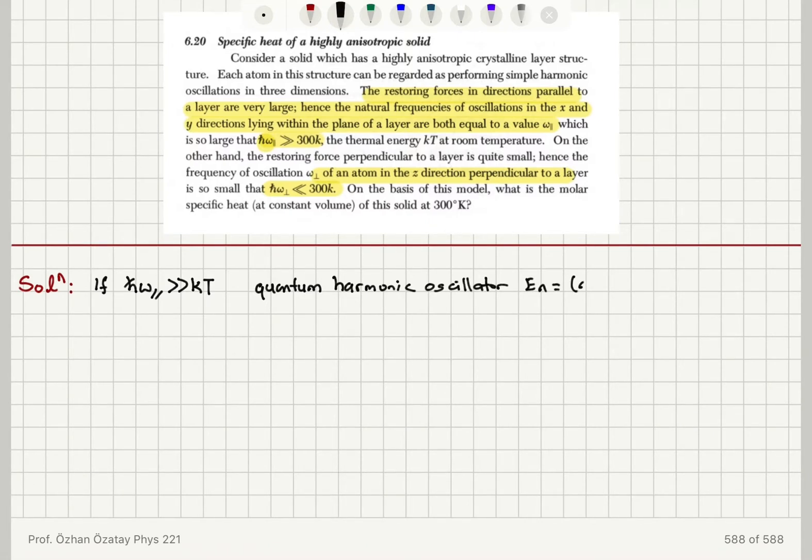so that the separation between energy levels is h-bar omega. So if the separation is so large, much greater than kT, that means the classical approximation should not hold for oscillations in the plane.